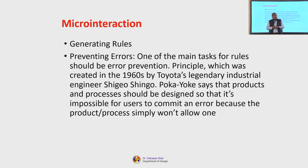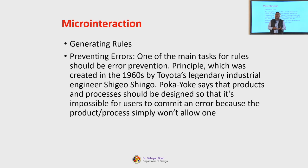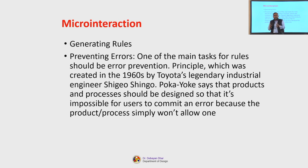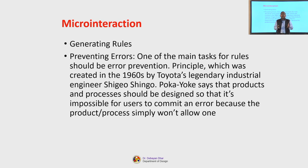One of the important aspects during generation of rules is to ensure that errors are prevented. One of the main tasks for rules should be error prevention. A principle created in the 1960s by Toyota's legendary industrial engineer Shigeo Shingo — Poka Yoke — says that products and processes should be designed so that it is impossible for users to commit an error, because the product or process simply would not allow one. Errors need to be handled in a way that your users would not be able to commit an error. This is an ideal situation. While in usability, we also consider that eventually there might be some situations wherein users will commit some errors.